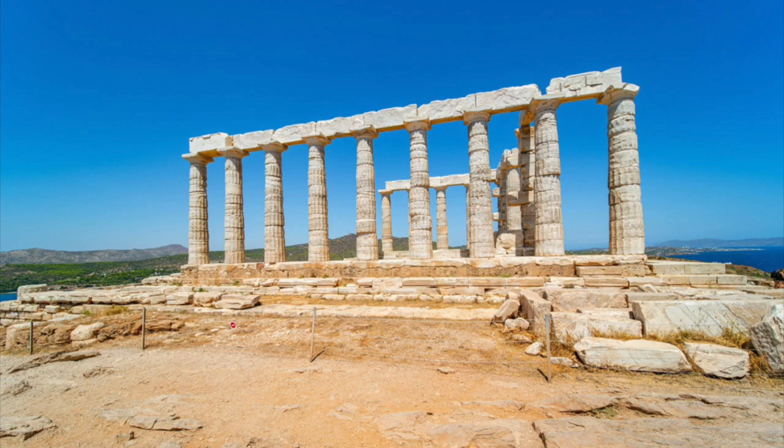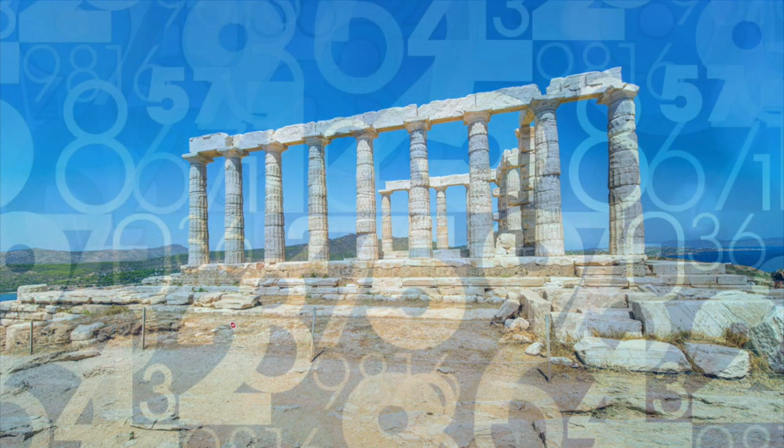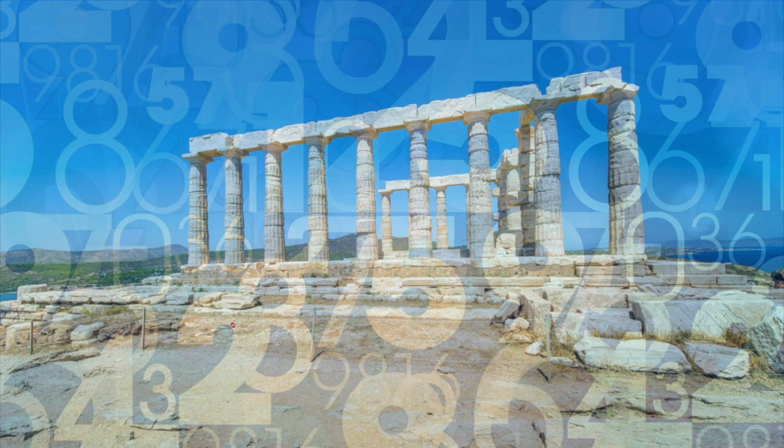Their devotion to everything numerical led them to classify numbers as even and odd, prime and composite, perfect and amicable. They introduced figurative numbers, triangular numbers, rectangular numbers, and the like, as a way of representing numbers geometrically.